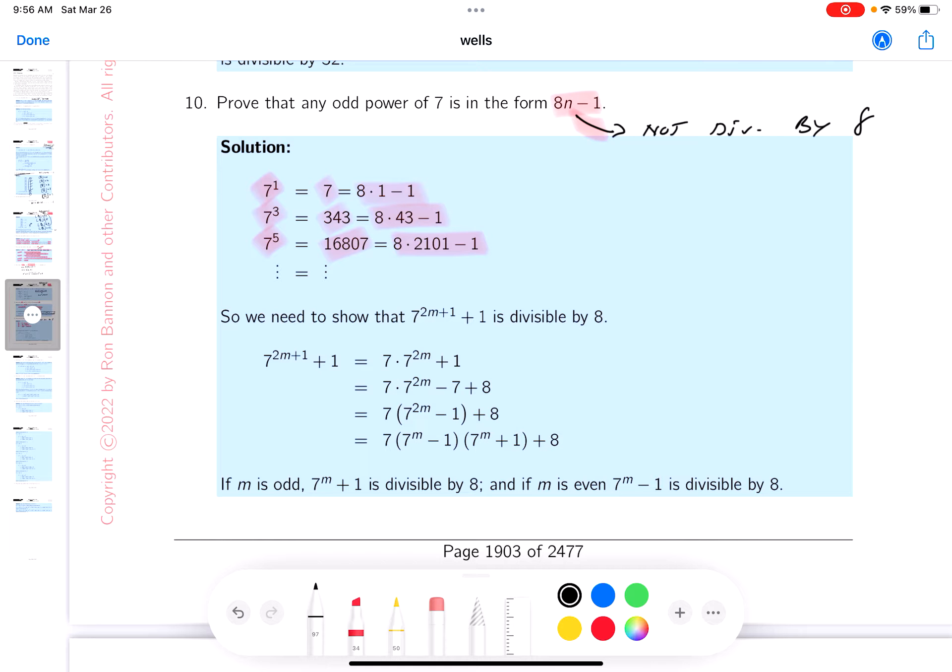Now, certainly it's going to be easier for me to get it divided by 8. So I'm going to write down, I really need to show that the odd powers of 7 plus 1 are divisible by 8. So the odd powers of 7 plus 1 are going to be divisible by 8.